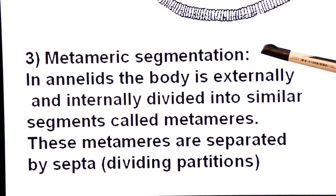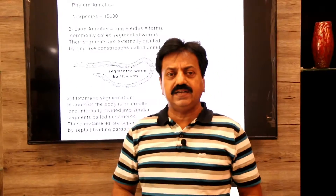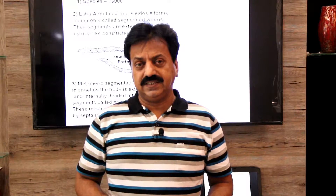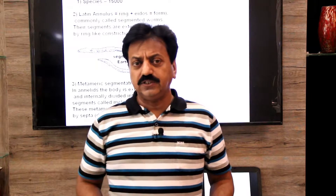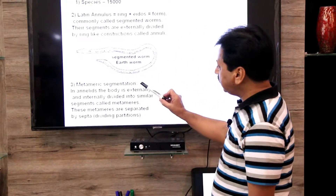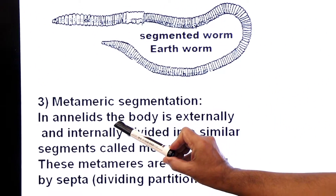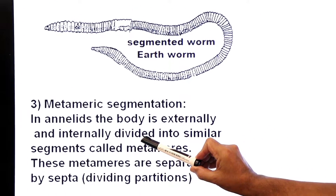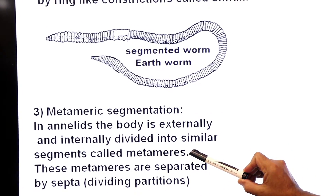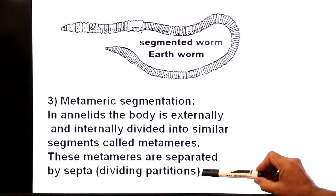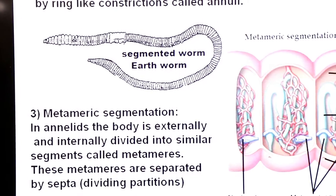What is metameric segmentation in annelids? Metameric segmentation is when the body of an animal is divided into similar repeating units. In annelids, the body is both externally and internally divided into similar segments called metameres. These metameres are separated by septa, which are dividing partitions.